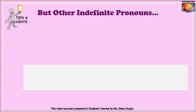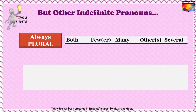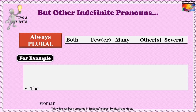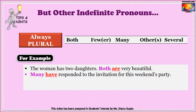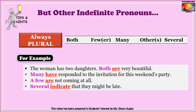A second set of indefinite pronouns is always plural: 'both,' 'few,' 'fewer,' 'many,' 'other,' 'others,' and 'several.' These pronouns agree with the plural verb. Examples: 'The woman has two daughters. Both are very beautiful.' 'Many have responded to the invitation for this weekend's party.' 'A few are not coming at all.' 'Several indicate that they might be late.' Plural verbs such as 'are,' 'have,' 'indicate' are selected for these pronouns.